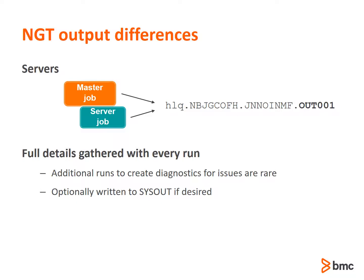NGT utility output is vastly different than traditional utility output for two main reasons. First, when you submit an NGT utility job, it's possible the job you submitted will likely submit other jobs to complete its work, called servers. Second, both the master job and any server jobs submitted by the master share a common VSAM file known as the journal.